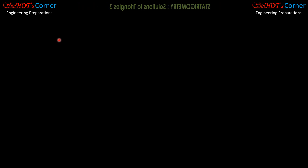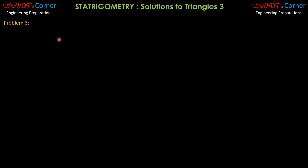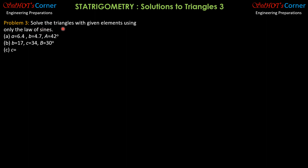Before we proceed, those who want to anticipate the solutions may do so by pausing the video. Remember that the law of sines has an ambiguous case, so we will expect that there may be two triangles, one triangle, or there's no solution or no triangle at all. So problem three — solve the triangles with given elements using only the law of sines.